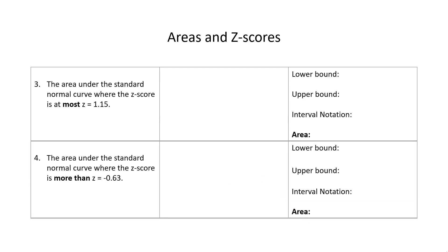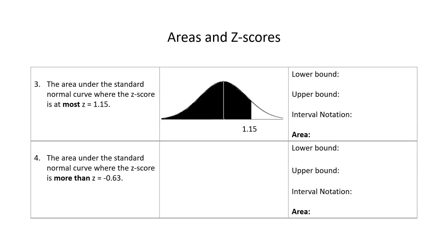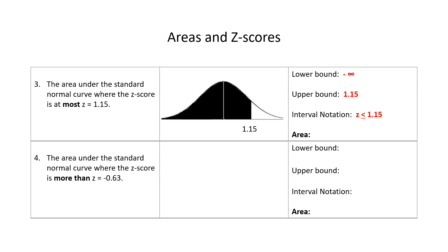Number 3: find the area under the curve that is at most z equals 1.15. From the picture, this is clearly more than 50%, so our answer should be more than 0.5. The lower bound is negative infinity and the upper bound is z equals 1.15. In notation, this is z less than or equal to 1.15. The area using Table 5 is 0.8749.